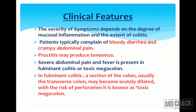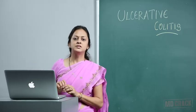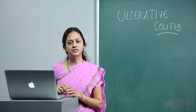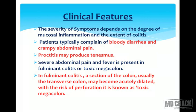In clinical features, the severity of symptoms depends upon the degree of mucosal inflammation and the extent of colitis. Patients typically complain of bloody diarrhea and crampy abdominal pain. Proctitis may produce tenesmus, which is crampy abdominal pain basically seen when the left-sided colon and rectum is involved. Severe abdominal pain and fever are present in fulminant colitis and toxic megacolon.